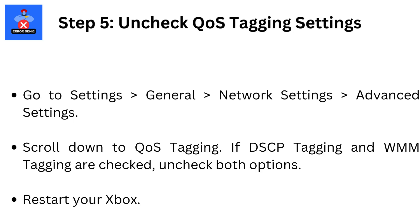Step 5: Uncheck QoS Tagging settings. Go to Settings, then General, then Network Settings, then Advanced Settings. Scroll down to QoS Tagging. If DSCP Tagging and WMM Tagging are checked, uncheck both options. Restart your Xbox.